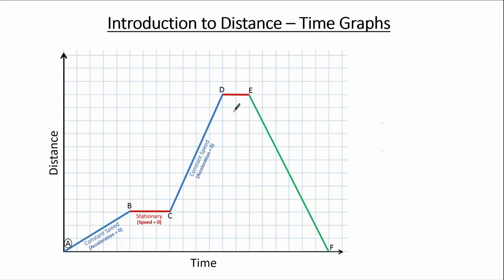The stage D to E is similar to stage B to C, so between D and E we are stationary and the speed equals zero. That brings us to our final stage, E to F, where F is the end point of the journey. Looking at stage E to F, the distance decreases linearly with respect to time and goes to zero, so E to F represents the journey back to the initial position. On this return journey we are again travelling with constant speed, so the acceleration between E and F also equals zero.